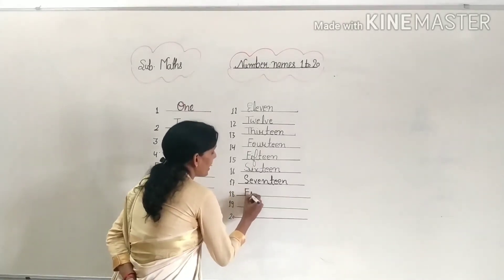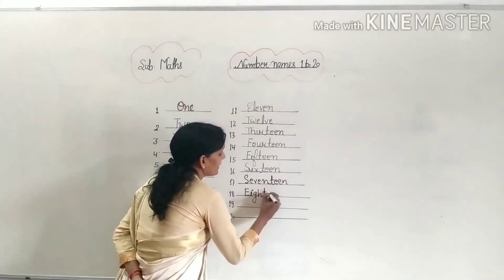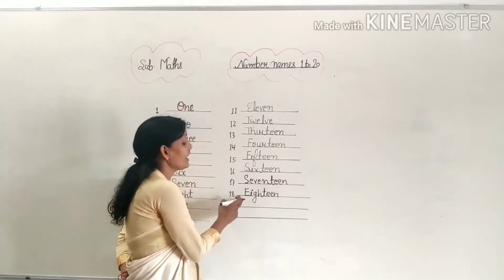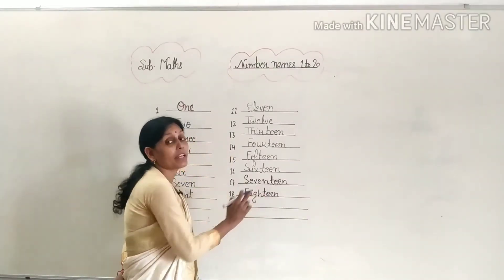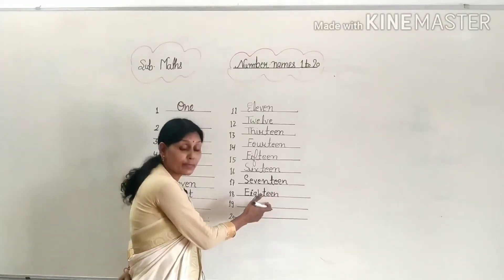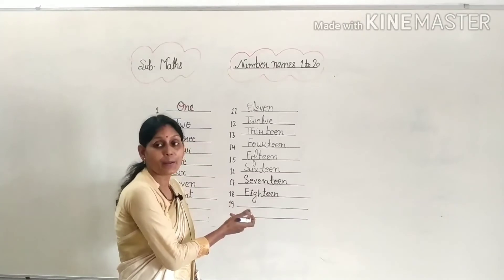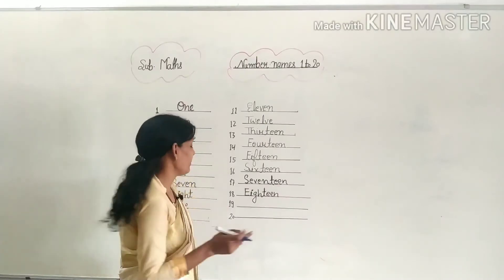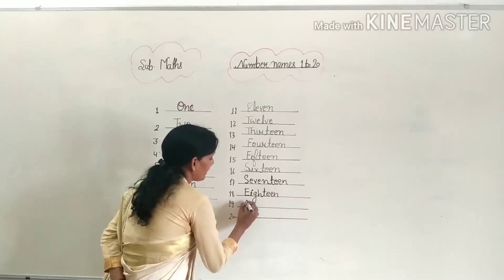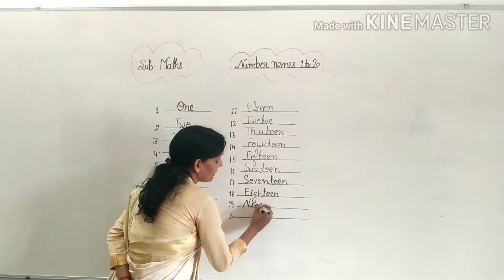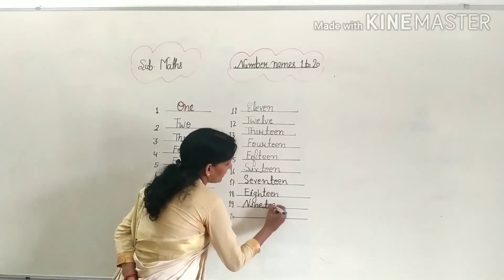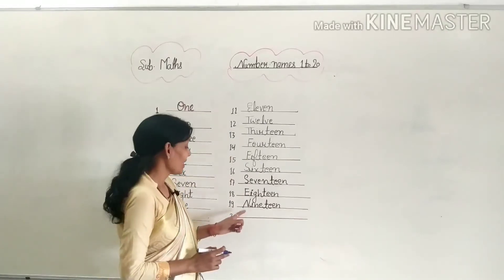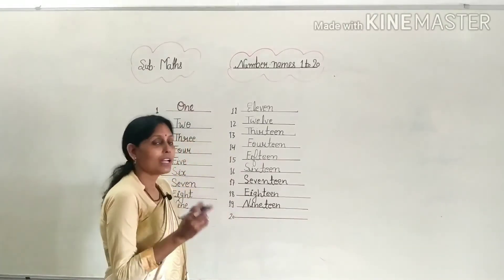Eighteen: E-I-G-H-T-E-E-N. What is the spelling of eighteen? E-I-G-H-T-E-E-N, eighteen. And nineteen: N-I-N-E-T-E-E-N. Nineteen. What is the spelling of nineteen? Nineteen.